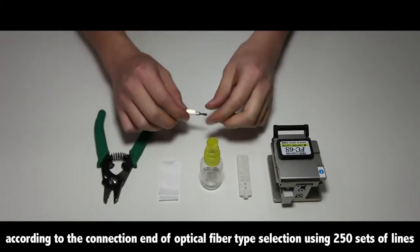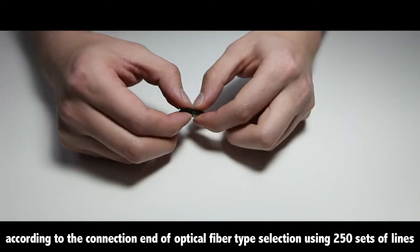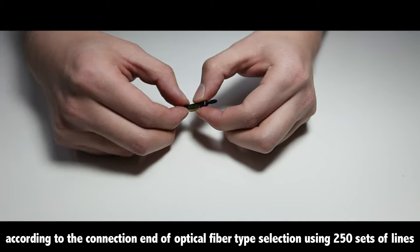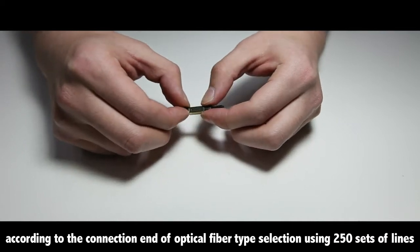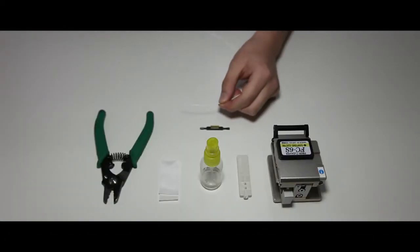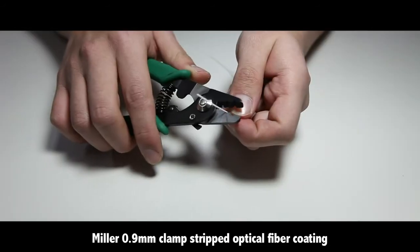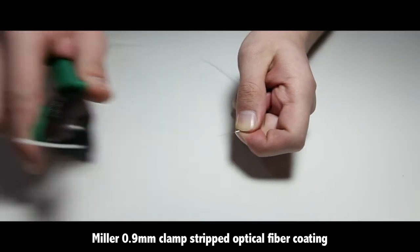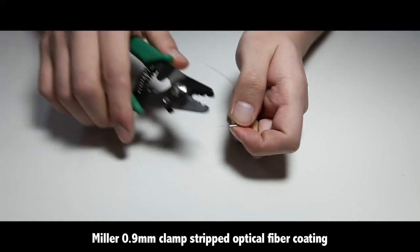According to the connection end of optical fiber type, select using 250 sets of lines. Use the Miller 0.9mm clamp strip to remove the optical fiber coating.